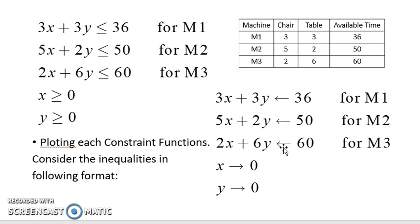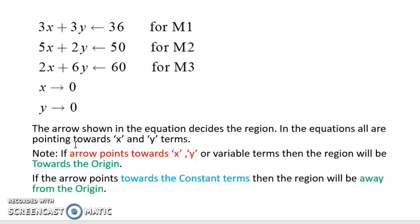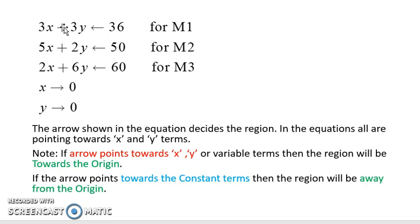I will give you two golden rules. Golden rule one: if the arrow points towards the variable terms (x, y, 5x+2y, 2x+6y), then the region will be towards the origin. Golden rule two: if the arrow points towards the constant term (36, 50, 60, or 0), then the region will be away from the origin. So for constraints like 3x+3y ≤ 36, the arrow points towards the x and y terms, meaning the region shades towards the origin. For x ≥ 0, the arrow points towards 0 (the constant), so the region is away from the origin.